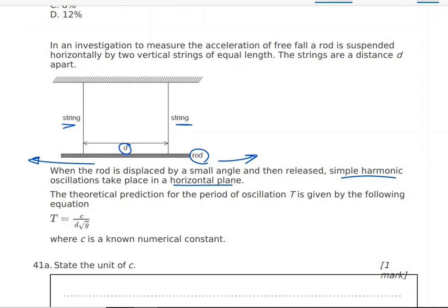The theoretical prediction for the period of oscillation, the period, we're going to study it in oscillation and wave, is time it will take to complete one cycle or one oscillation. It has a symbol T. So T equals C over D times square root of G. G is the freefall acceleration. C is constant. D is the horizontal distance between the two springs.